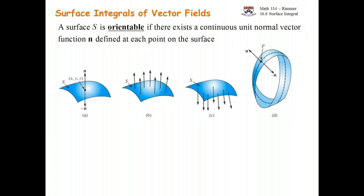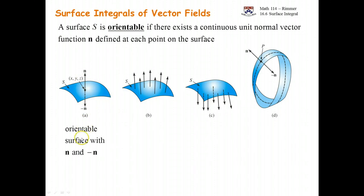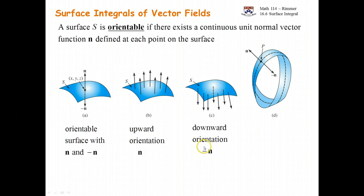Here are some examples. We have a patch of surface and we have this normal vector n, and then the opposite of that is minus n. This is an orientable surface with the n and the minus n. We have to talk about when you want the positive orientation or the negative — the upward orientation or the downward orientation. If you use n, you're talking about the upward orientation; if you use minus n, you're talking about the downward orientation.